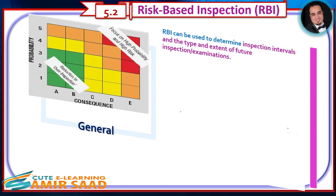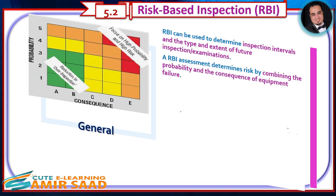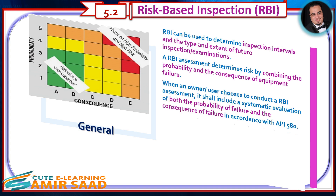Risk-based inspection (RBI) can be used to determine inspection intervals and the type and extent of future inspection examinations. RBI's assessment determines risk by combining the probability and the consequence of equipment failure. When an owner-user chooses to conduct an RBI assessment, it shall include a systematic evaluation of both the probability of failure and the consequence of failure in accordance with API 580.